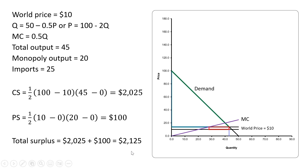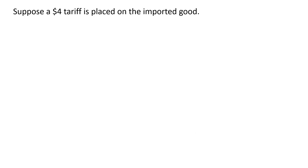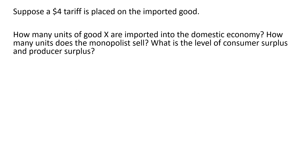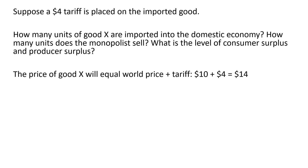Now let's look at the effect of a tariff. Suppose a $4 tariff is placed on the imported good. How many units of good X are imported into the domestic economy? How many units does the monopoly sell? And once again, let's find consumer surplus and producer surplus. The price of good X will now equal the world price plus the tariff, or $14.